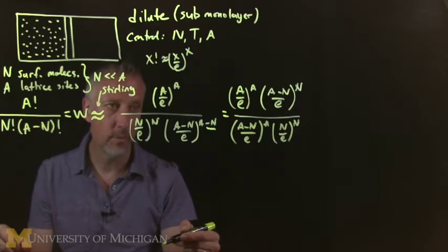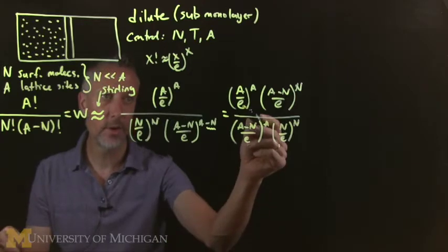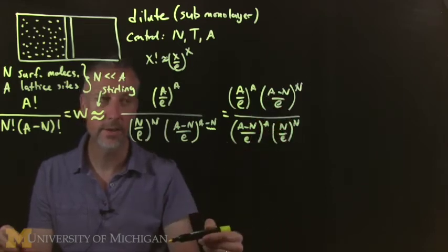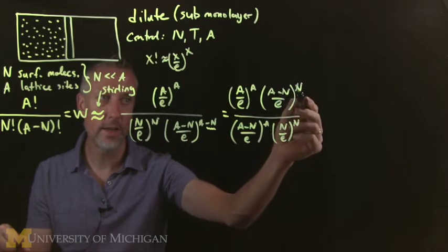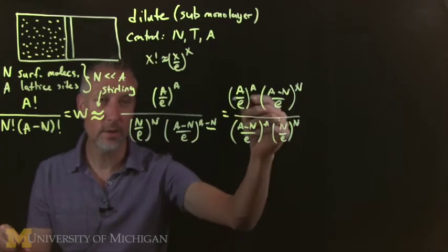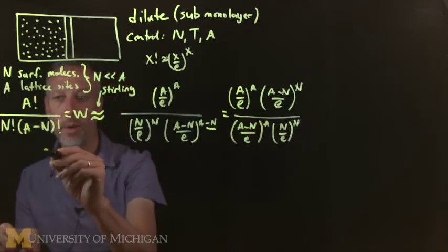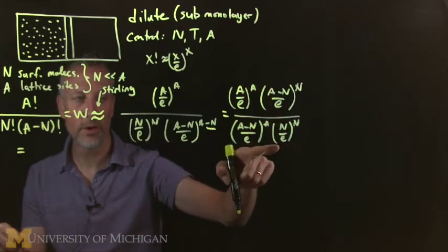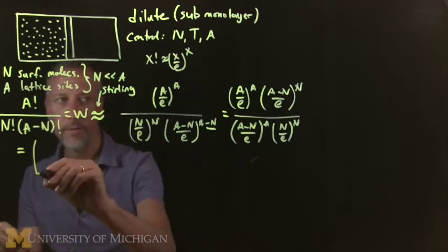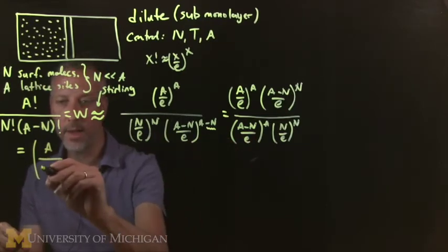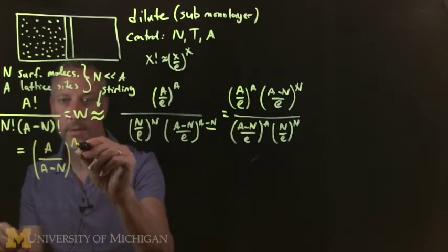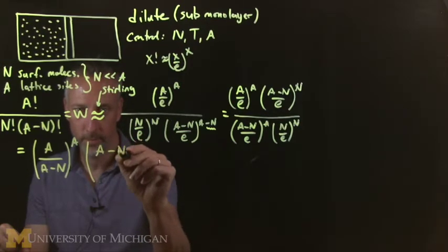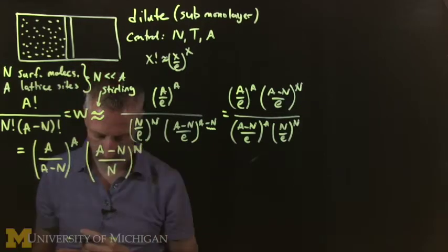We group the terms so the A power is under the A term and the N power is under the N term. The first thing to notice is that the e^A terms cancel between numerator and denominator, and similarly all the e^N terms cancel. So all the E's go away. We then lump terms by power and get: [A/(A−N)]^A times [(A−N)/N]^N.